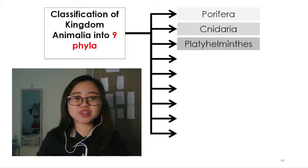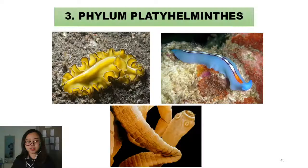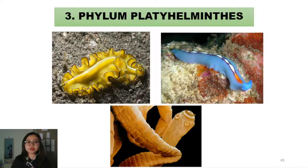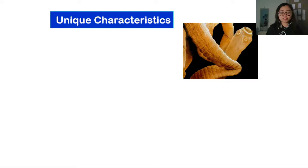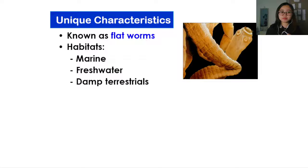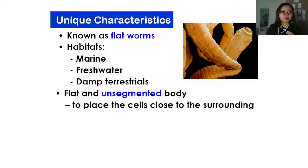Hello and welcome back. In this video, we're going to continue with the third phylum in Kingdom Animalia, which is Phylum Platyhelminthes — the phylum with colorful flatworms. We'll look at unique characteristics of organisms in Phylum Platyhelminthes, starting with the fact that they are known as flatworms and their habitats are in marine environments, freshwater, or also in damp terrestrial environments.